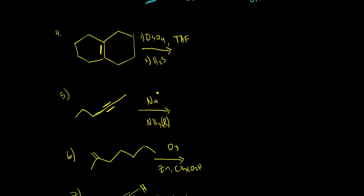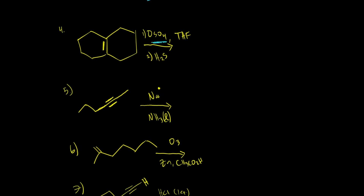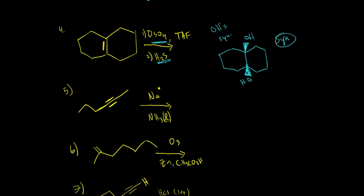Let's go on to number four. We have OsO4. This is a good one. Anytime you see OsO4 with this little combo, you should be thinking add OHs syn. So you just simply get rid of your double bond, and wherever you got rid of your double bond, just fill in the missing bond with an OH group. I got an OH here and I could put an OH here. Notice how I did it on the same side — so this was syn addition. Either way, they're going to give you the same answer.